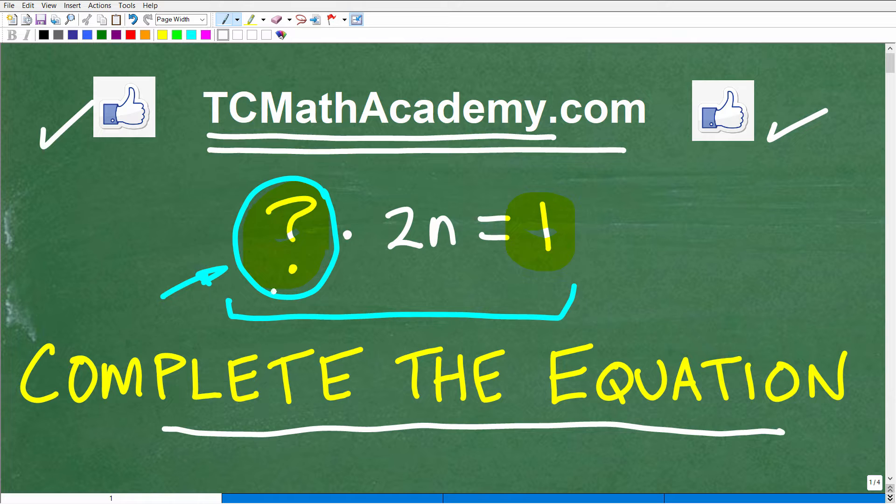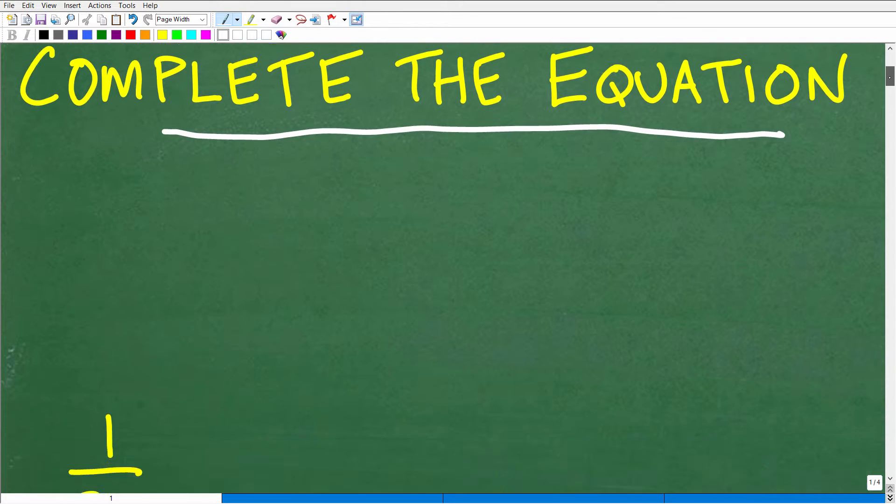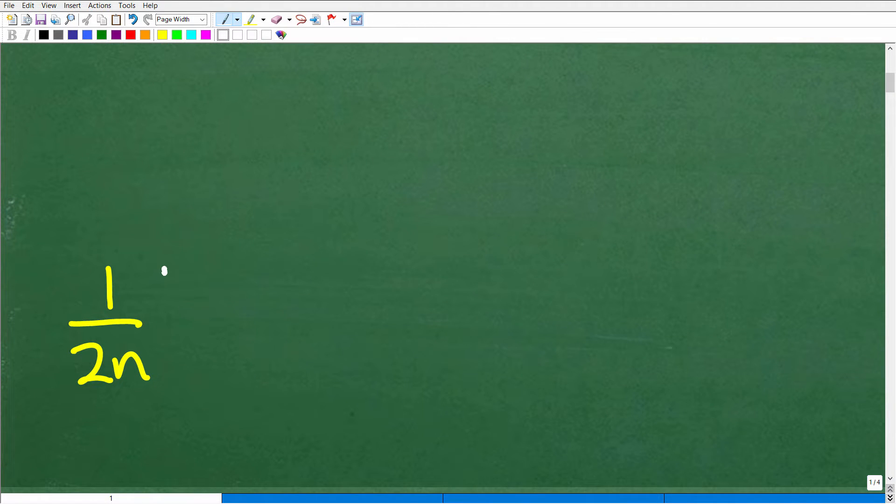Okay, so what times 2n is equal to 1? Well, let's go ahead and take a look at the answer right now. The answer is 1 over 2n.